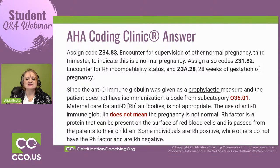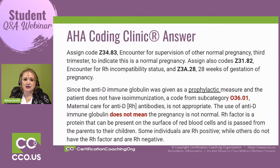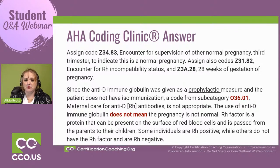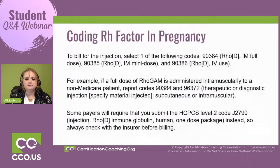You're going to use Z34.83 — encounter for supervision of the pregnancy, normal pregnancy at this stage, third trimester — to indicate this is a normal pregnancy. You're also going to code Z31.82 for the encounter for RH incompatibility status, and then Z3A.28 because it's 28 weeks of gestation. Again, this is given as a prophylactic measure and the patient does not have isoimmunization, so the use of the medication does not mean the pregnancy is not normal.